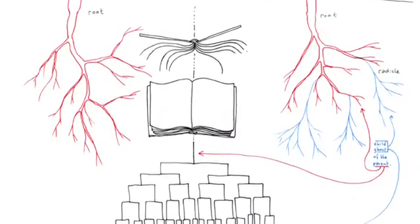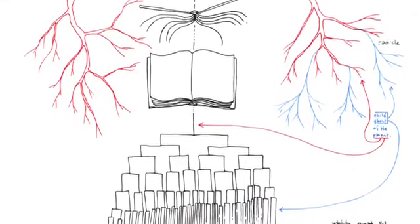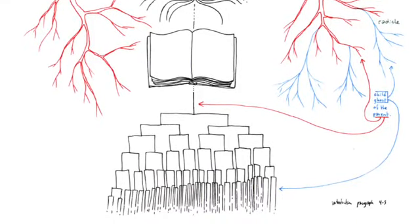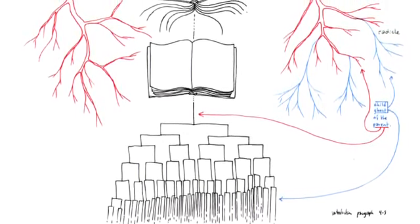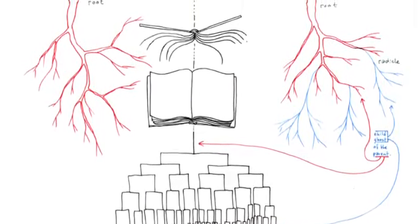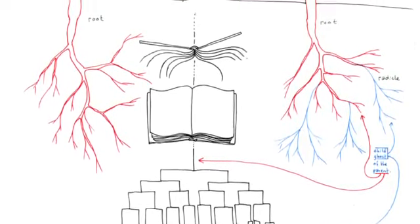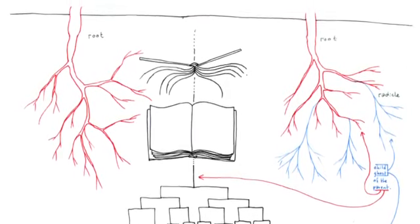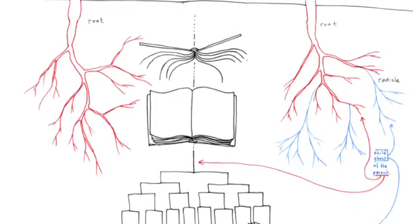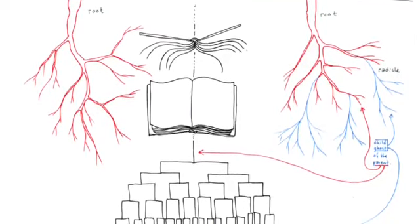A first type of book is the root book. The tree is already the image of the world, or the root, the image of the world tree. This is the classical book, as noble, signifying, and subjective organic interiority. The book imitates the world as art imitates nature. The law of the book is the law of reflection, the one that becomes two. One becomes two. Whenever we encounter this formula, what we have before us is the most classical and well-reflected, oldest, and weariest kind of thought.